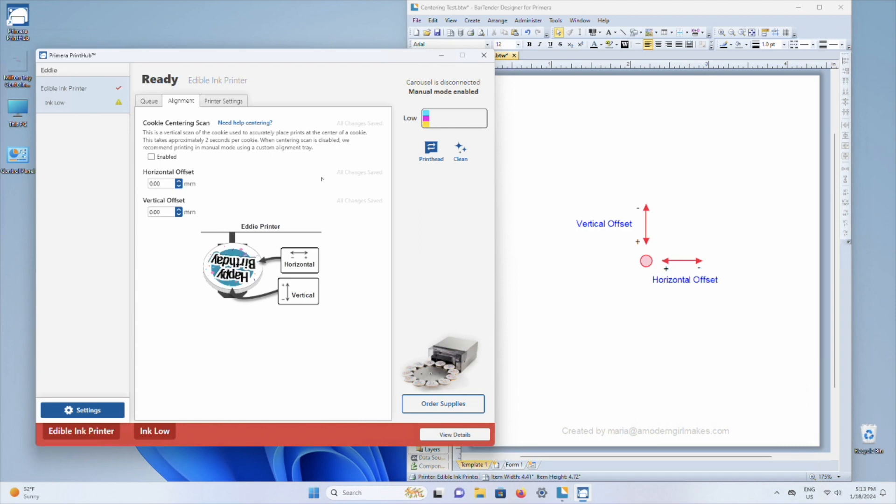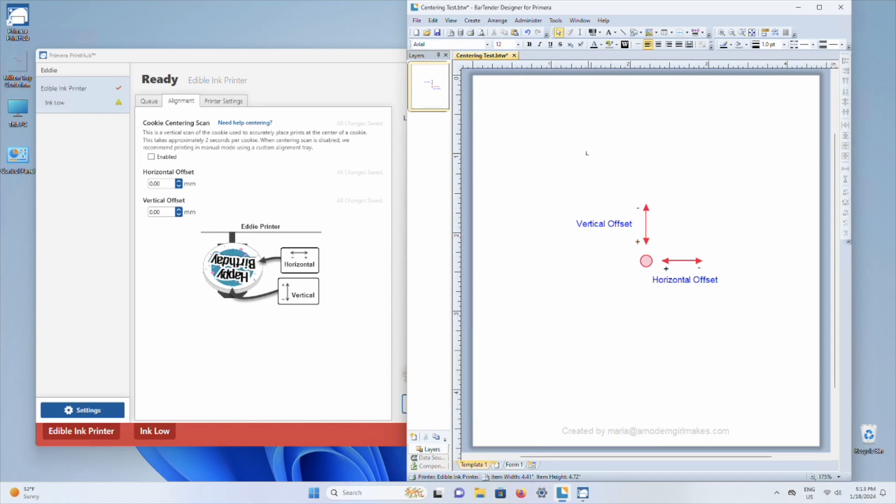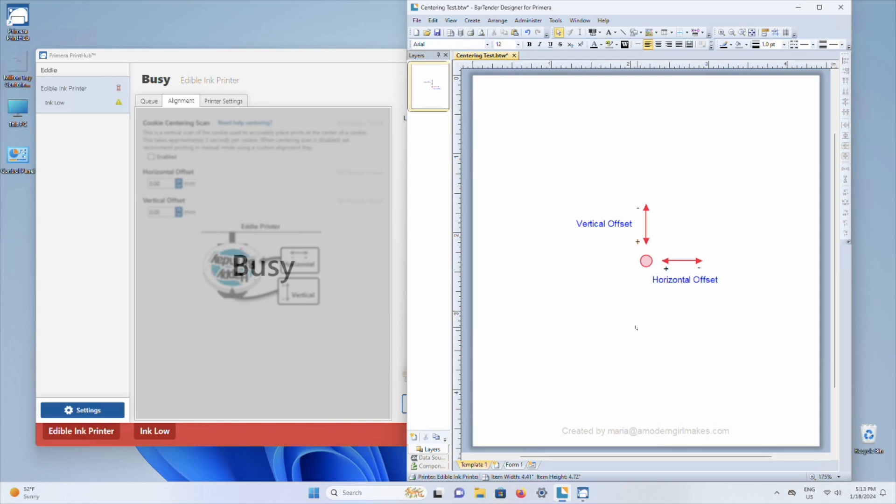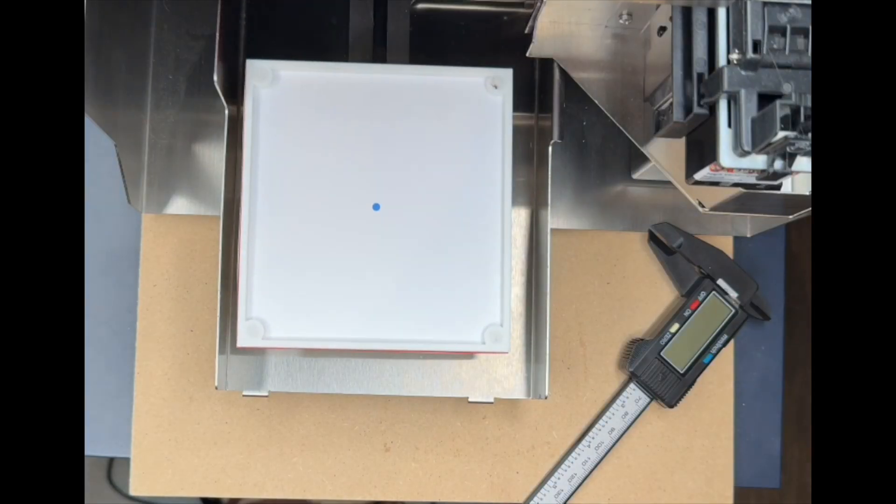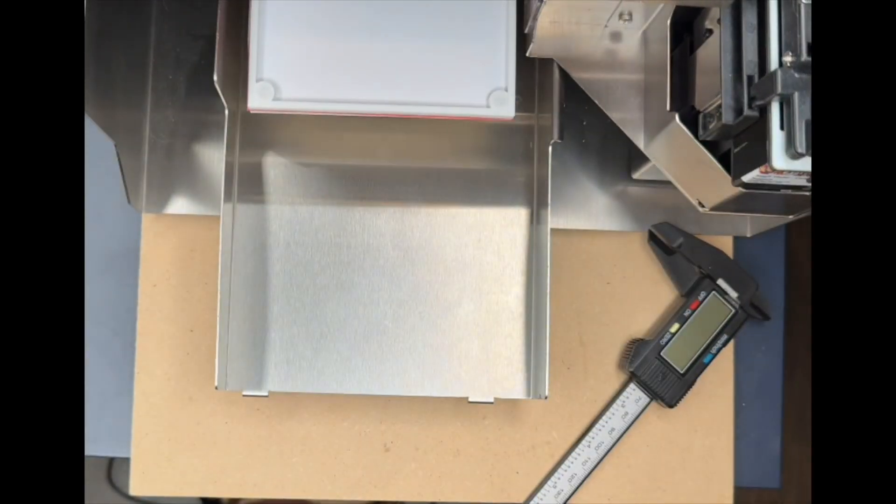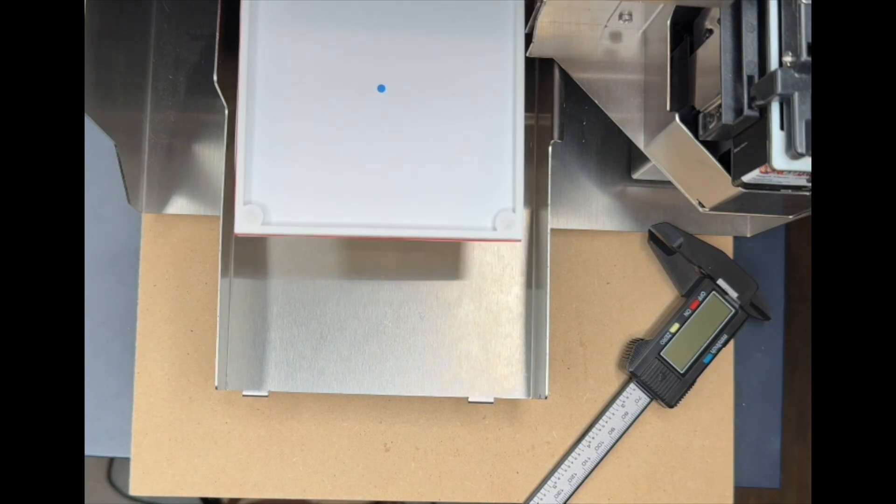So we're ready to do that first print. To do that, I'm going over to the Bartender software. Here, with this template already set up, I'm going to do Control-P for print. And I'm going to take advantage of this test print right here. All right, Eddie. I'm going to hit the pause button.